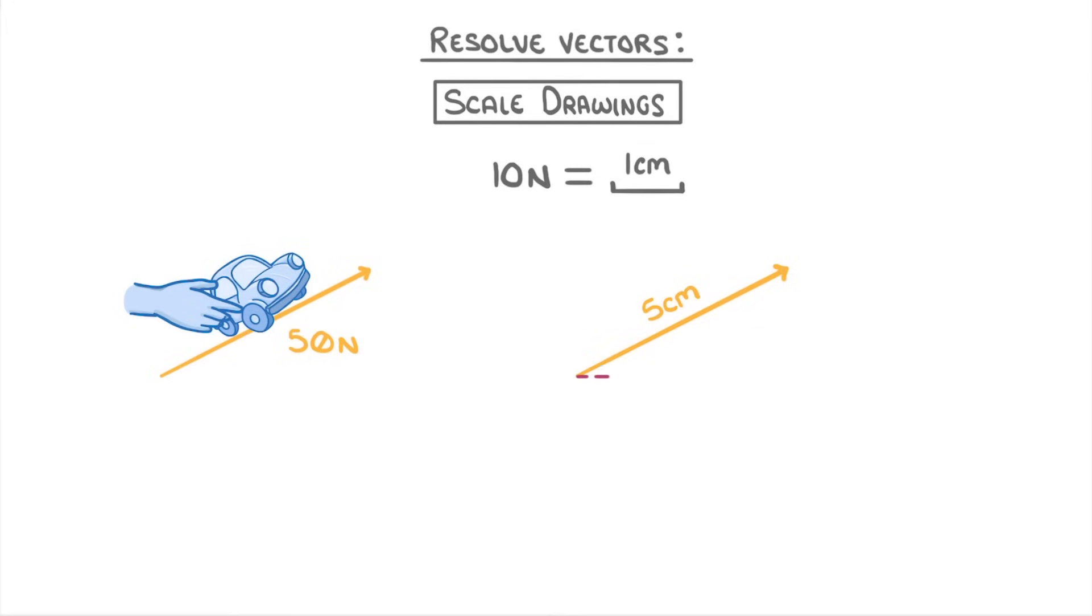Then all we have to do is draw a horizontal line down here and a vertical line up here, putting an arrow on each of them so that we know their directions. Then we just measure them with a ruler to find that they're 4 centimeters and 3 centimeters. And so looking at our scale, we can convert them to find that they must be a 40 newton force to the right and a 30 newton force upwards. So we've now resolved the 50 newton force into its horizontal and vertical components.